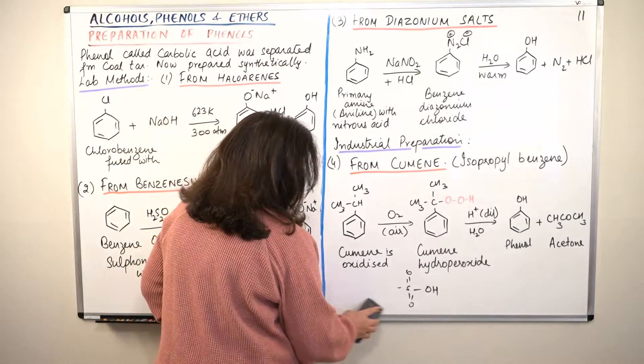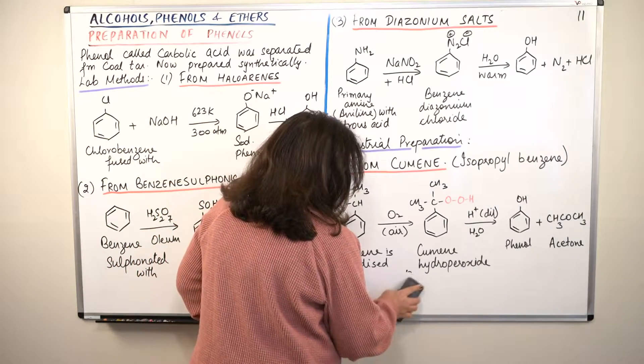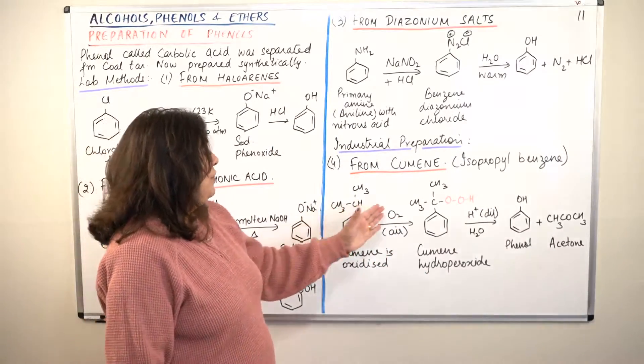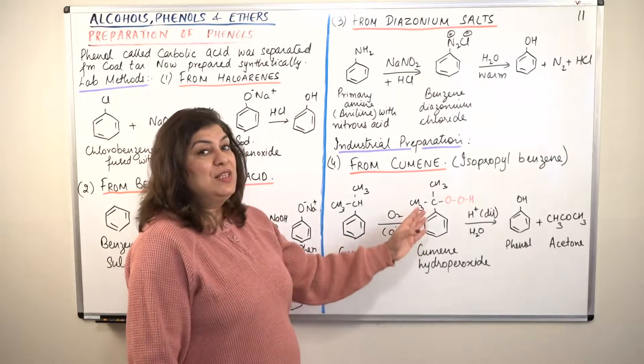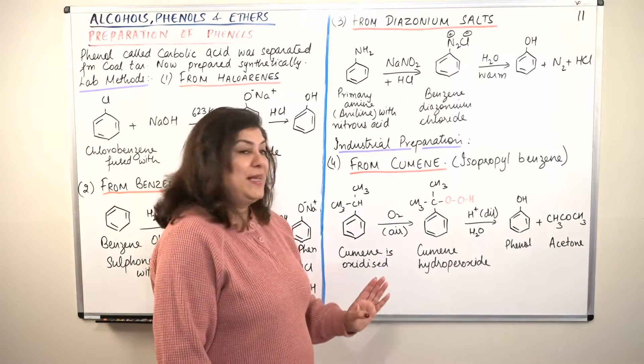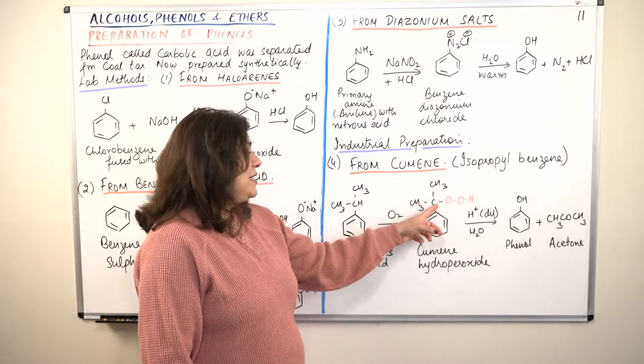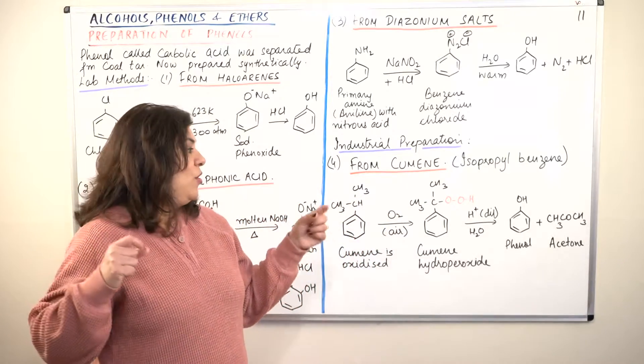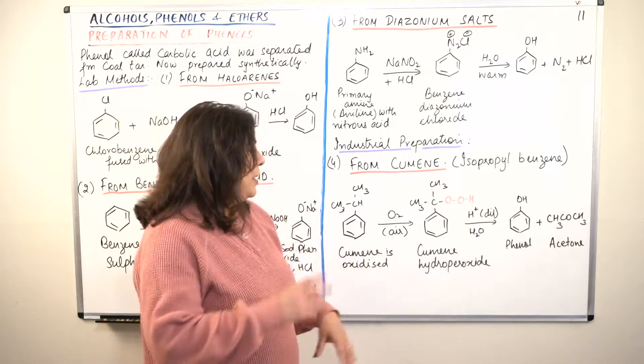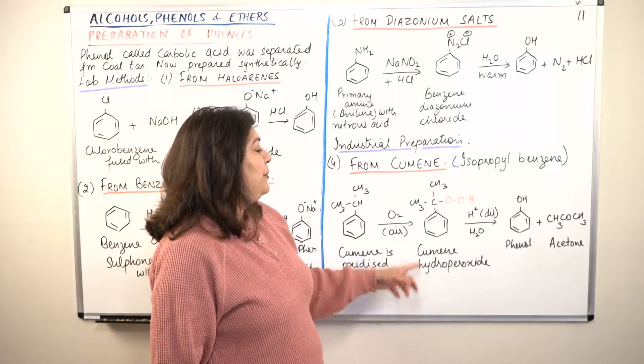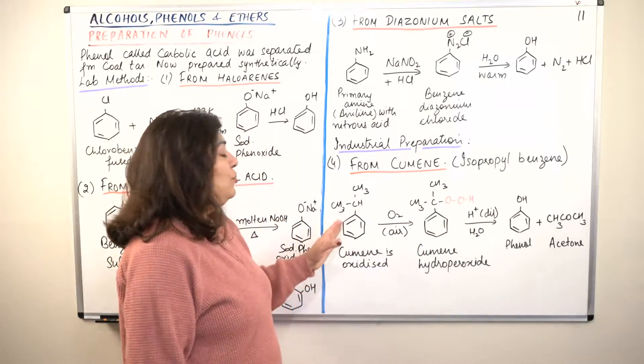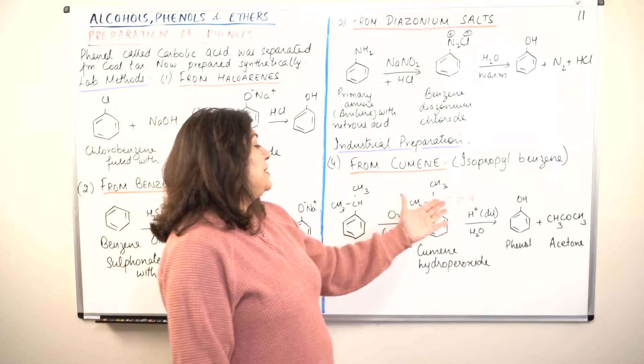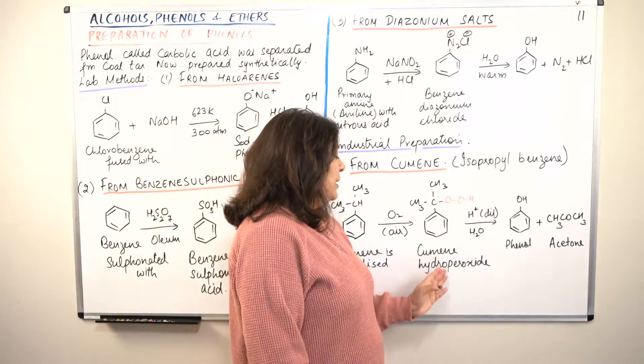So cumene is oxidized. And how is cumene oxidized? In air. So it is made to react with air. When it reacts with air, it results in the formation of cumene hydroperoxide. What is a peroxide? A peroxide is a molecule which has oxygen-oxygen attached like this - OO is a peroxide group. So cumene hydroperoxide is formed when you make cumene react with air or when cumene reacts with oxygen from the air, resulting in the formation of cumene hydroperoxide.